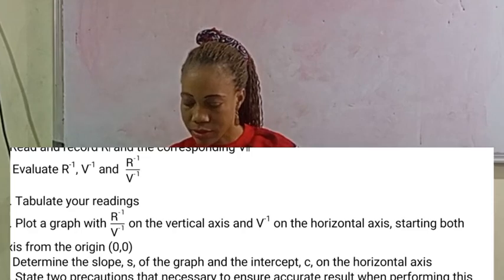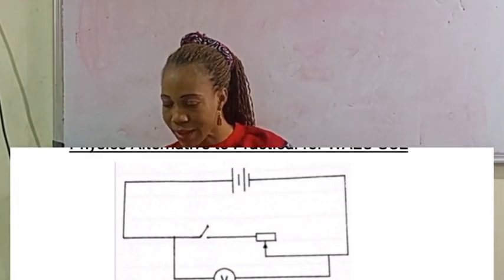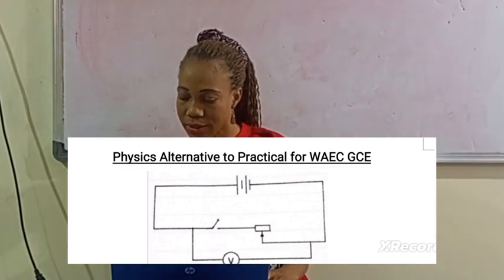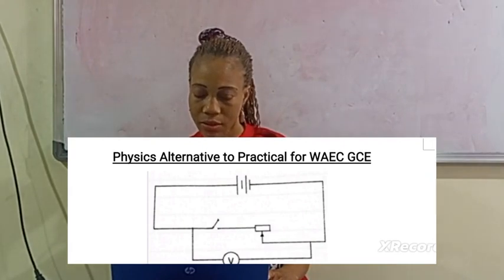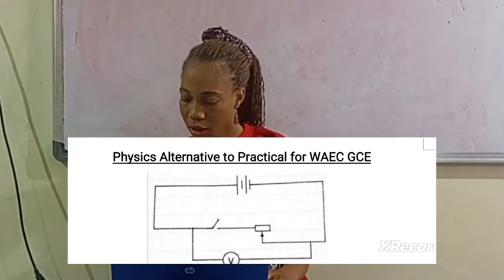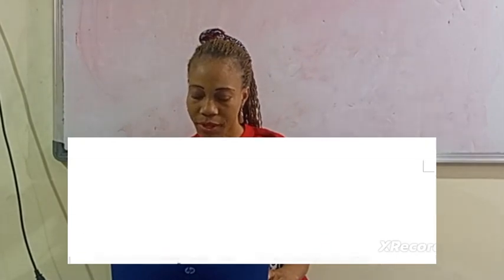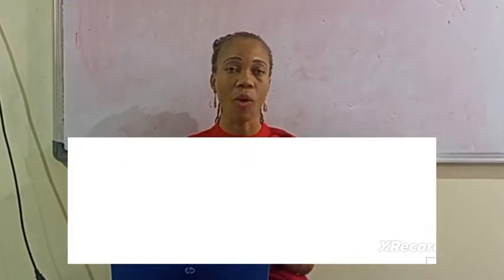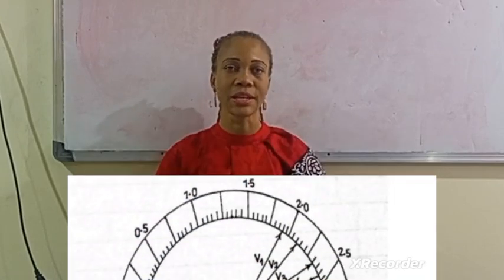This is the question. The first diagram given is for the resistance box, and the next diagram is for the voltmeter reading. Let's take our readings — please watch this video to the end because we are going to plot the graph and see the nature of the graph.